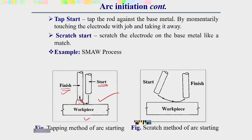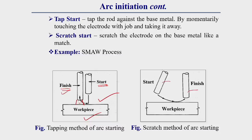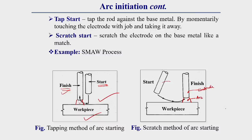The scratching method involves scratching the electrode on the base plate like a match. After scratching, at the finish position an arc is obtained. Both tapping and scratching methods are generally used in shielded metal arc welding (SMAW).